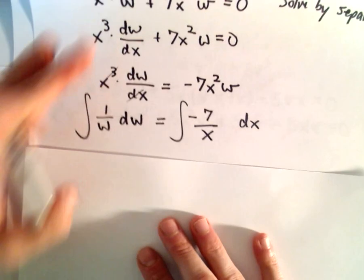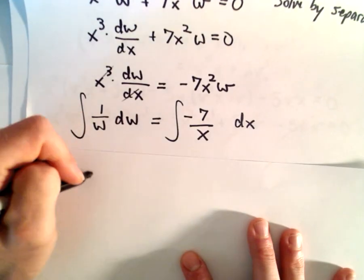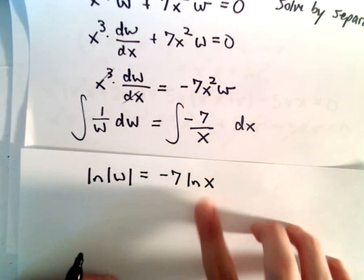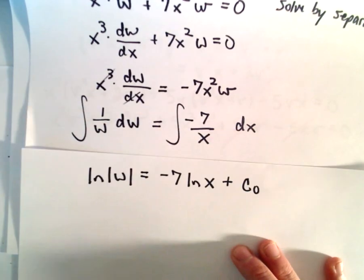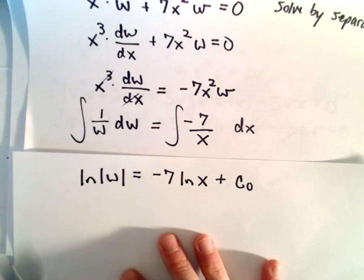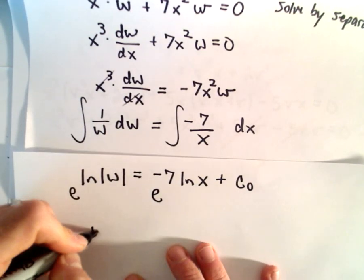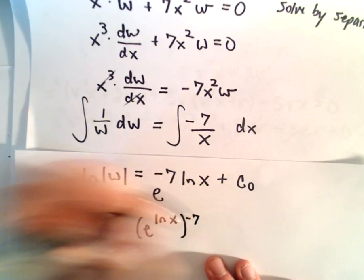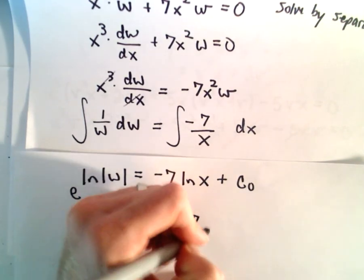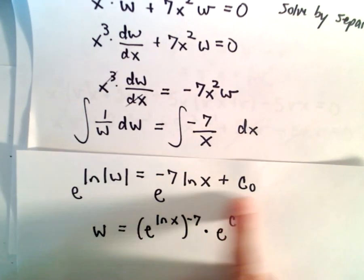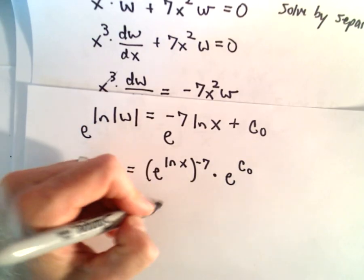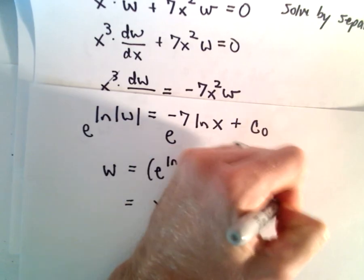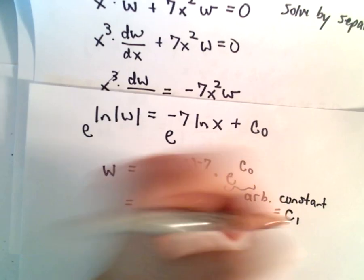Integrating both sides — and we're assuming x is greater than 0 — we get the natural logarithm of the absolute value of w on the left, and negative 7 times ln of x plus some constant c sub 0 on the right. Exponentiating both sides, w equals e to the (negative 7 ln x) times e to the c sub 0. Since e to the ln x is just x, we have x to the negative 7 power. And e to the c sub 0 is just some arbitrary constant, which I'll call c sub 1.